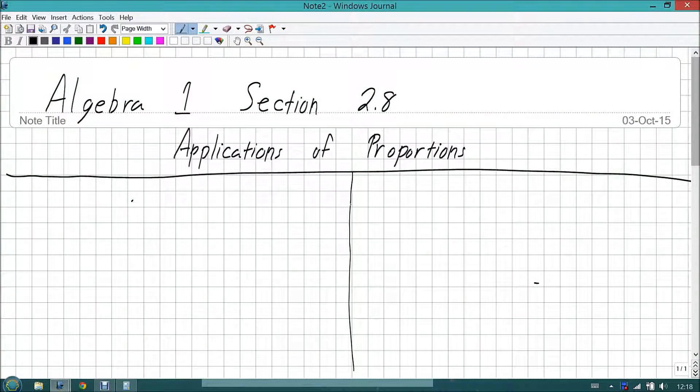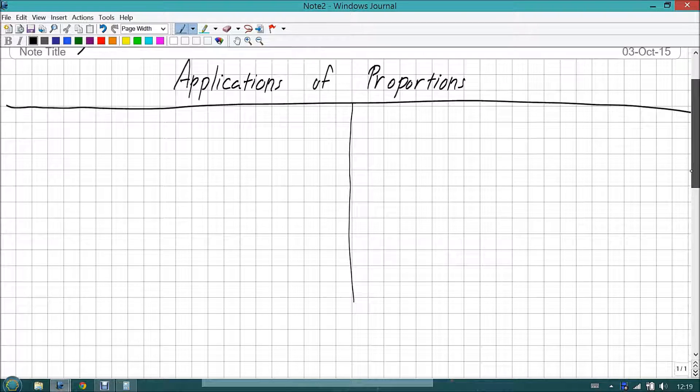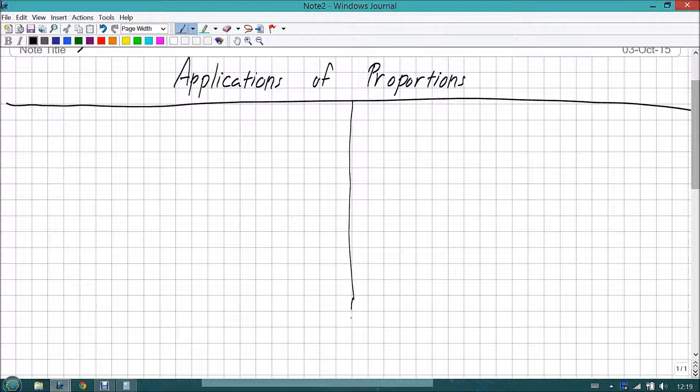Hello, ladies and gentlemen, and welcome back to Prospect Charter School's Algebra 1 course. Today, we're going to be going over Section 2.8, Applications of Proportions. In the previous class, we learned about what proportions and ratios were, and saw some uses of it in our daily life. Now we're going to look at it from more of a geometry perspective, and also from an engineer's perspective, and from a biologist's perspective.